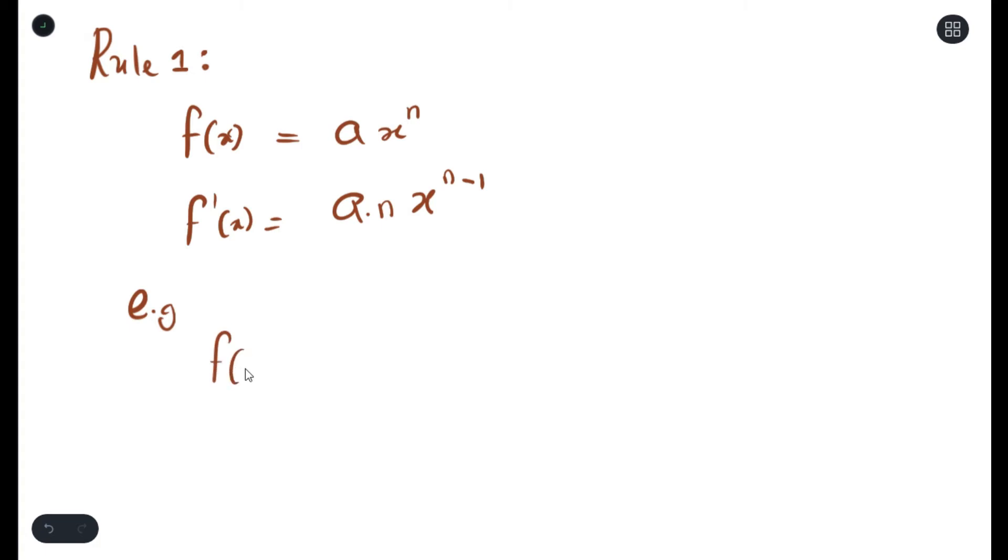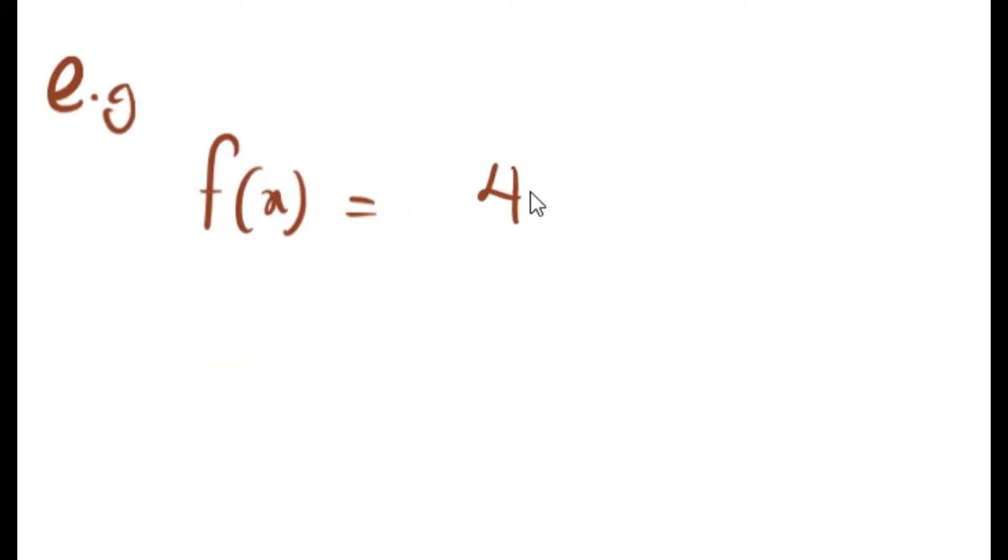An example of this: if you have a function which is 4x to the power 3, the derivative would be 4 times 3x and 3 minus 1. As you can see, we multiply the exponent by the coefficient of x and we subtract the exponent by 1. So the final answer will be 12x squared, and that's it.